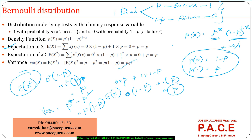There is not much to do in R specifically for Bernoulli since the experiment is not repeated. The Bernoulli distribution paves the way to understand the binomial distribution in depth. The same experiment, instead of being performed once, is performed n number of times — that is where the Bernoulli distribution gives rise to a binomial distribution.